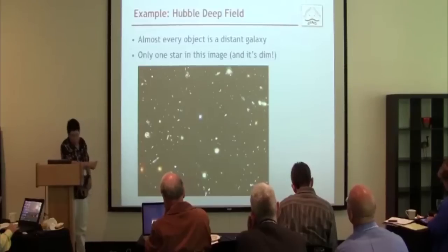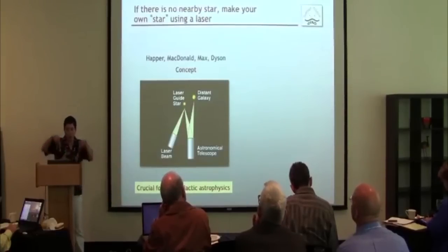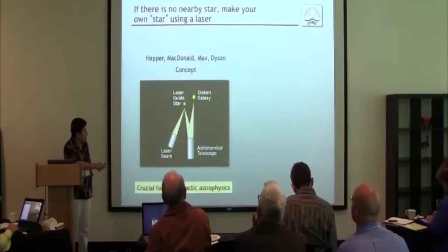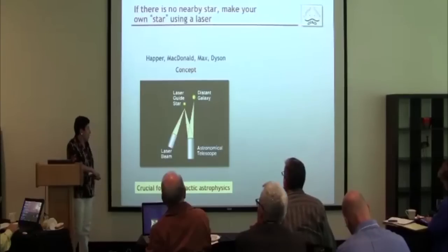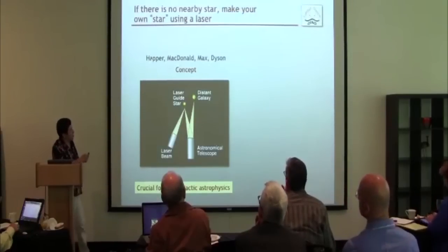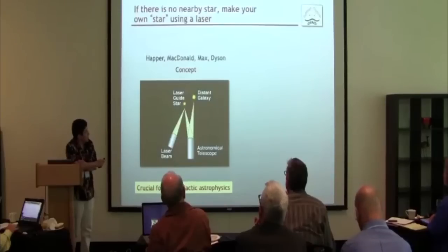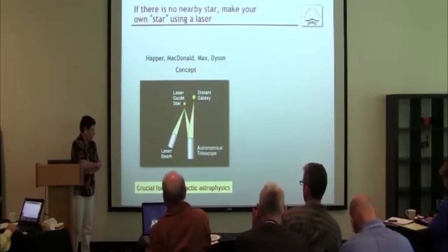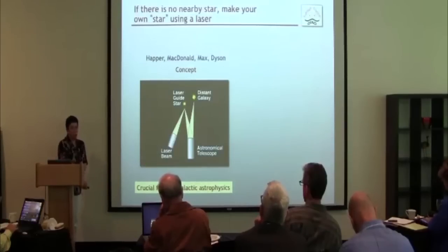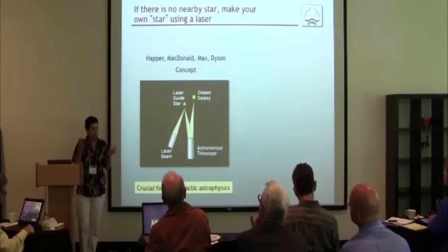That's why laser guide stars were invented. If there's no star nearby, you make your own star using a laser that you project up into the sky from your telescope. You can point this anywhere — in particular, right at the thing you want to make an image of. This was originally invented by Will Happer and Gordon McDonald for a military application, and then we came along and said this would work just as well for ground-based telescopes. It's now absolutely crucial for extragalactic astrophysics.